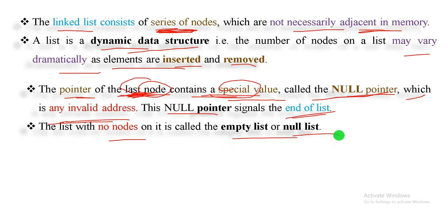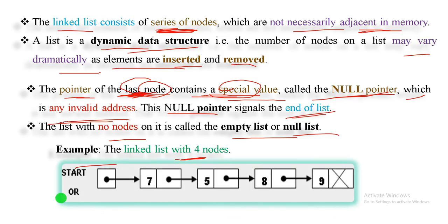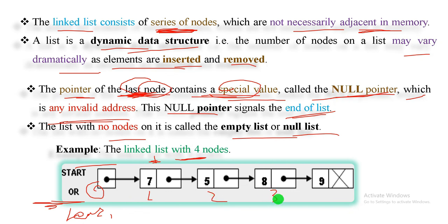For example, a linked list with four nodes is a simple example. There is a start — or head — pointer pointing to the first node. The four nodes are numbered one, two, three, four. The start or head pointer points to the first node's address via the link field. Each node contains data plus a link field, and the link field stores a specific memory address pointing to the next node.